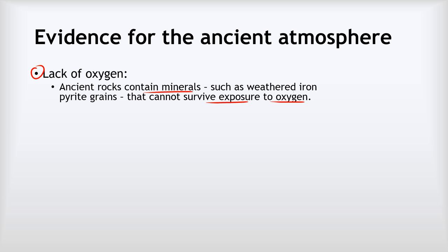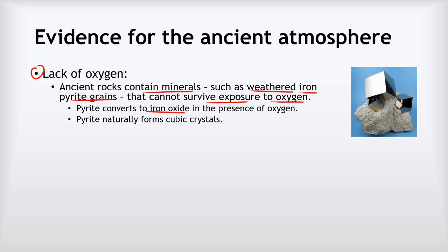And one example of such a mineral is weathered iron pyrite grains. Now pyrite is a mineral that naturally as soon as there's any oxygen around it will convert itself to iron oxide, and it naturally forms these cube-shaped crystals like this. Now what we find in these very ancient rocks is there are weathered grains of pyrite where the grains are no longer cubic like they would naturally form but are actually rounded.